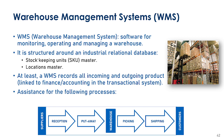More generally, these systems are intended to assist the different processes between our suppliers and our customers. The main processes are: the reception of goods received from suppliers, the put-away which consists of locating items in different locations within the warehouse, the picking which is the process of retrieving items from locations to gather everything a customer has ordered, and the shipping which is preparing the items to be delivered to customers.